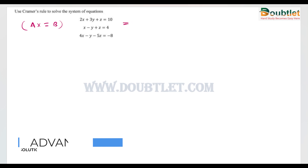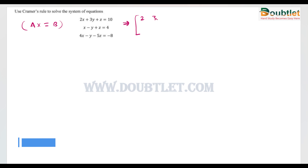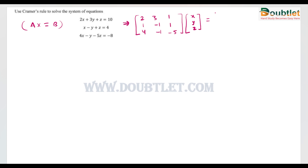This is a system of equations representing Ax = B. We can write this system of equations as matrix A = [[2, 3, 1], [1, -1, 1], [4, -1, -5]], x is the column matrix [x, y, z], and B is the column matrix [10, 4, -8].